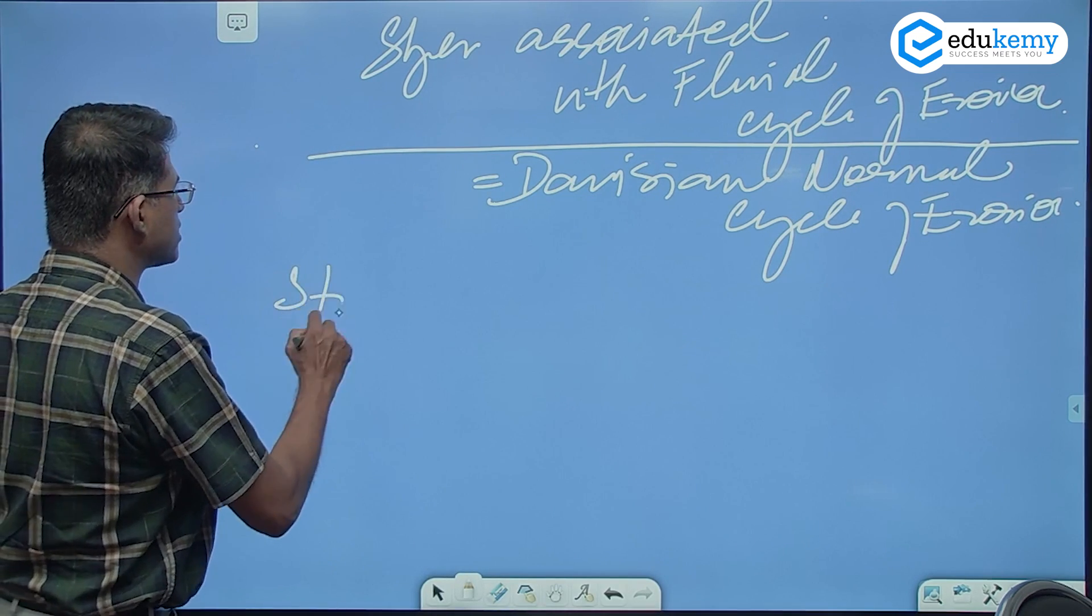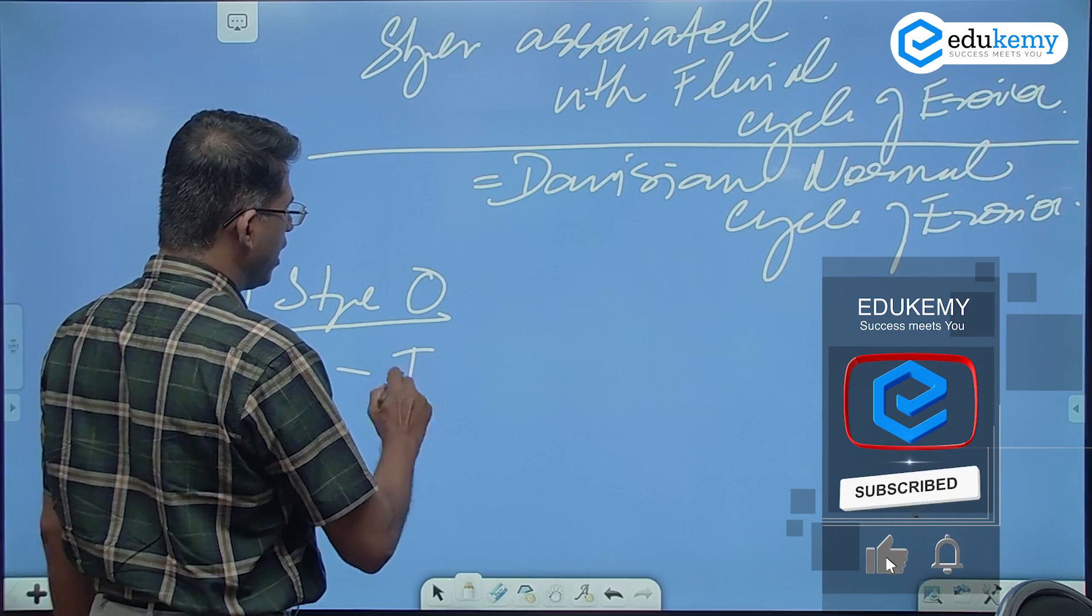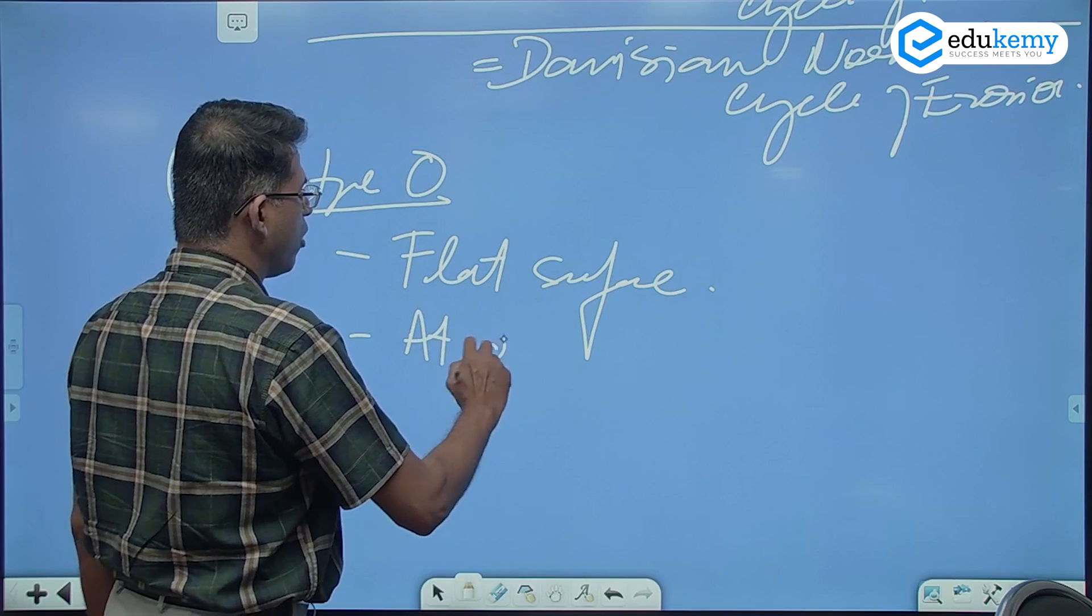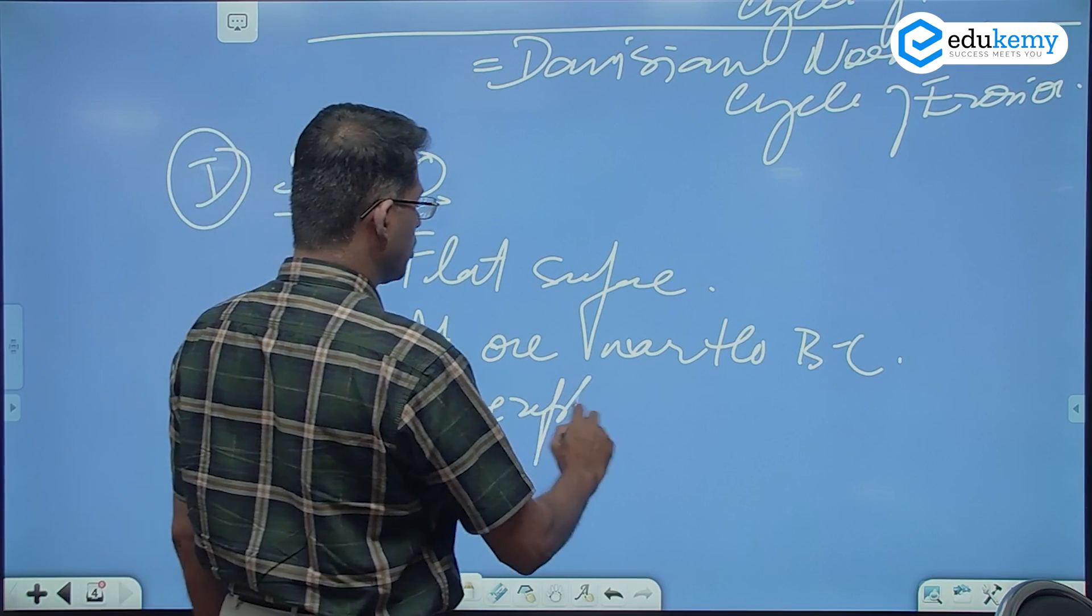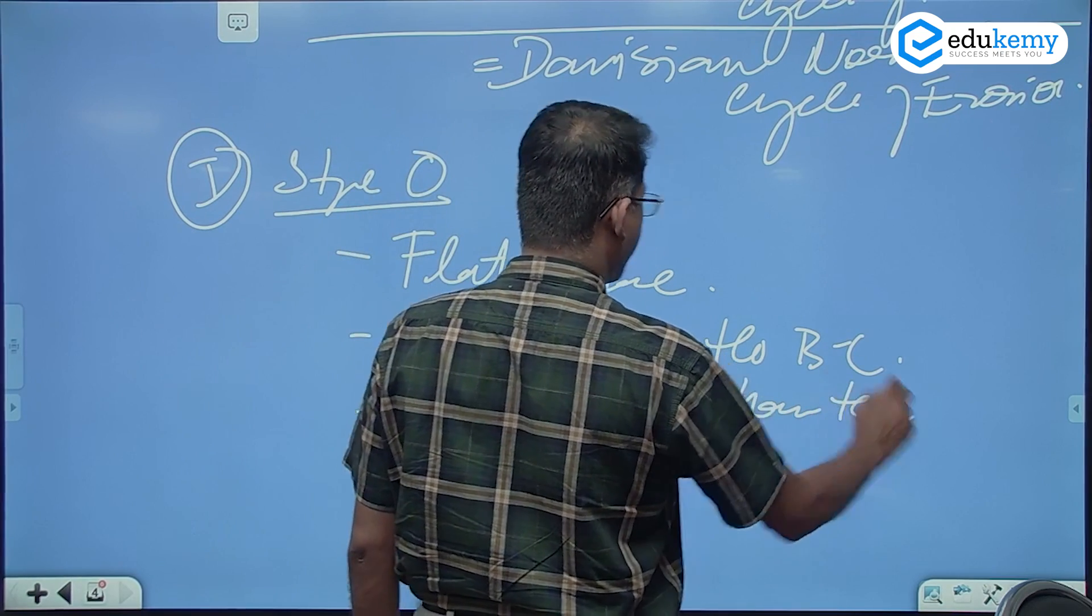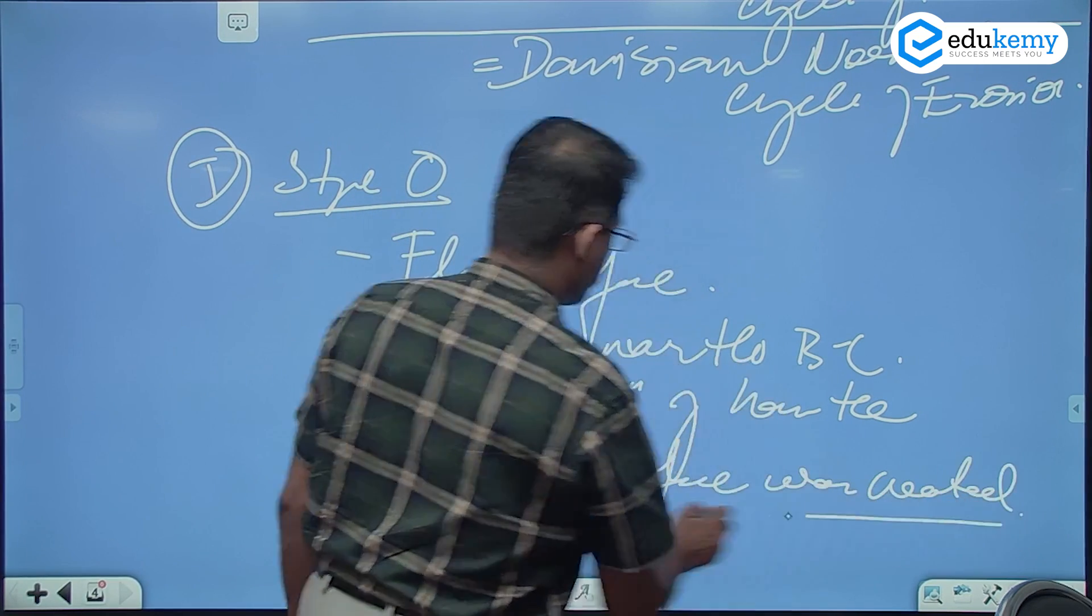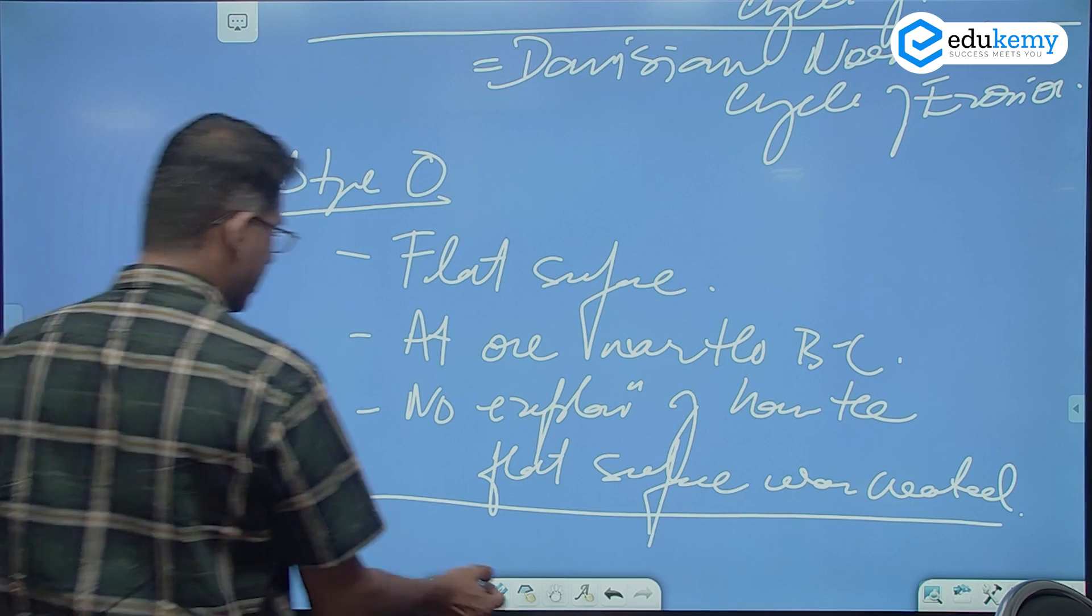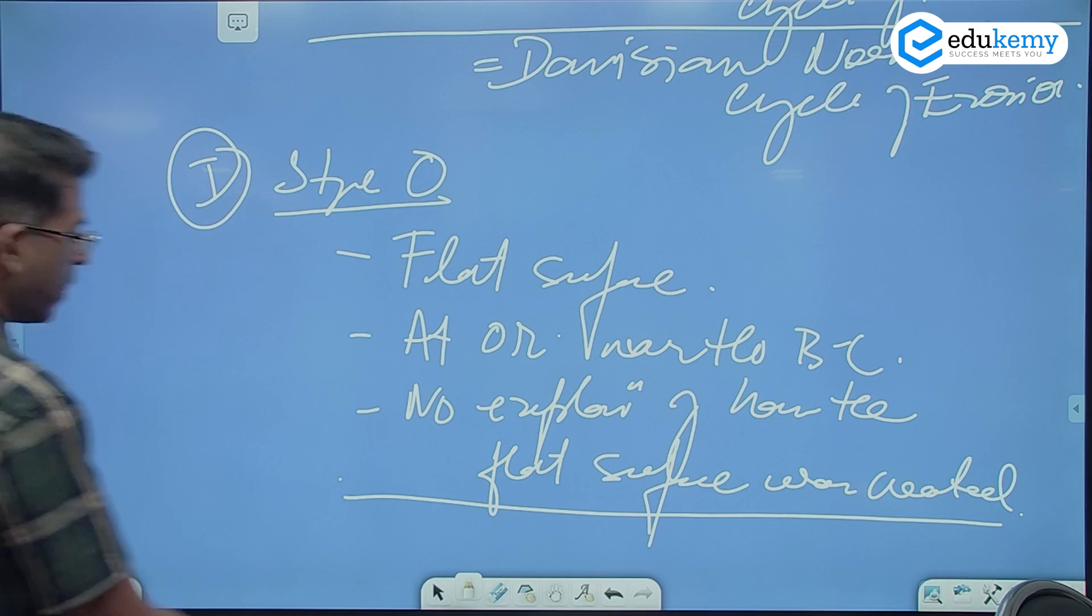So he says that the landform, the evolution, it starts with a stage zero. Stage zero, there is a flat surface, and this flat surface is at or near the base level. No explanation of how the flat surface was created. And in the zero stage, the flat surface...